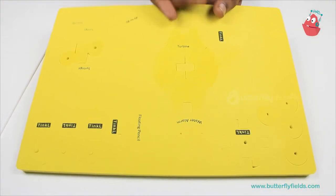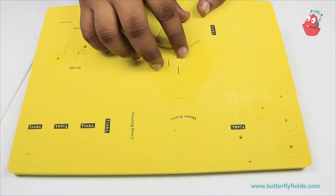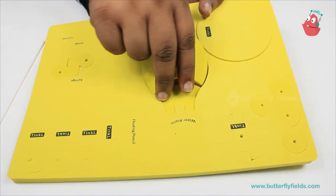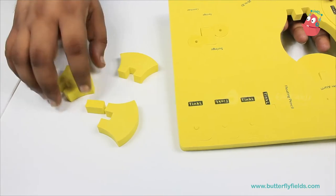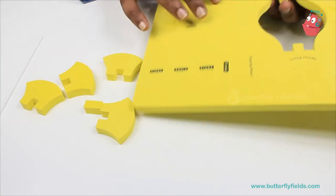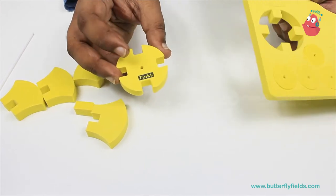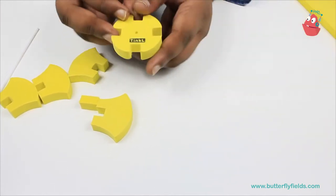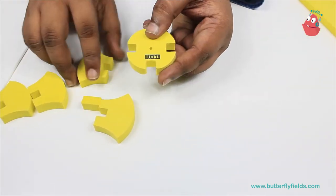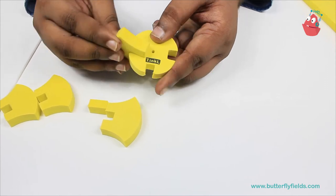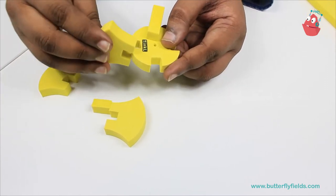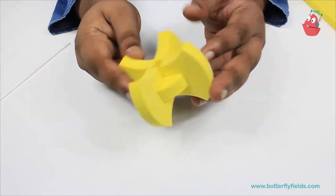As you can see here, it is written turbine, so you can take these pieces out. We'll need these four pieces, and to fix these four, we will need this connector. At each corner, we'll fix one blade. Now the turbine is ready.